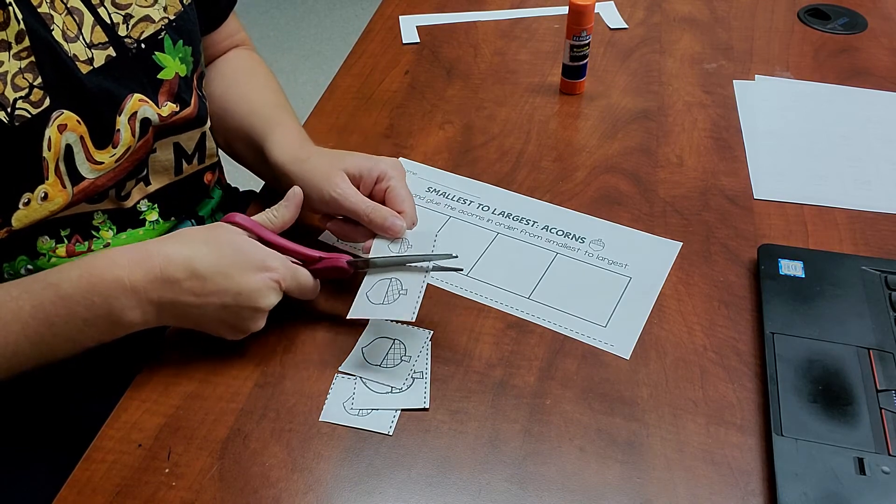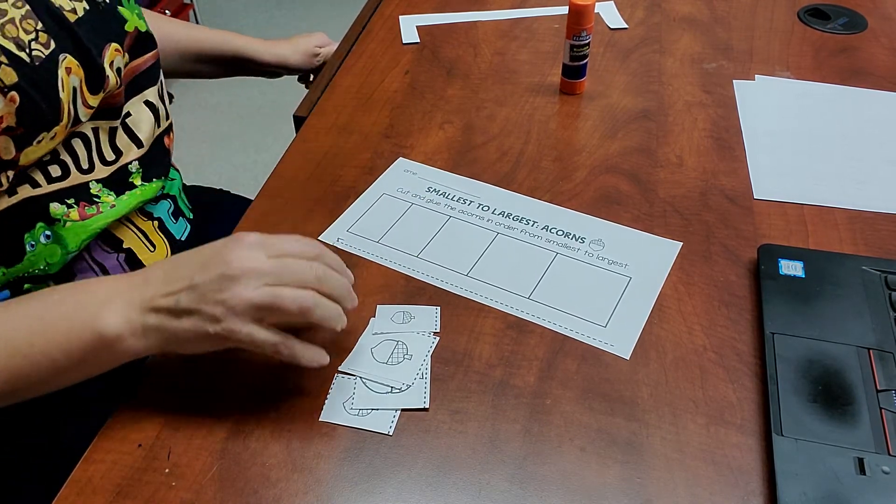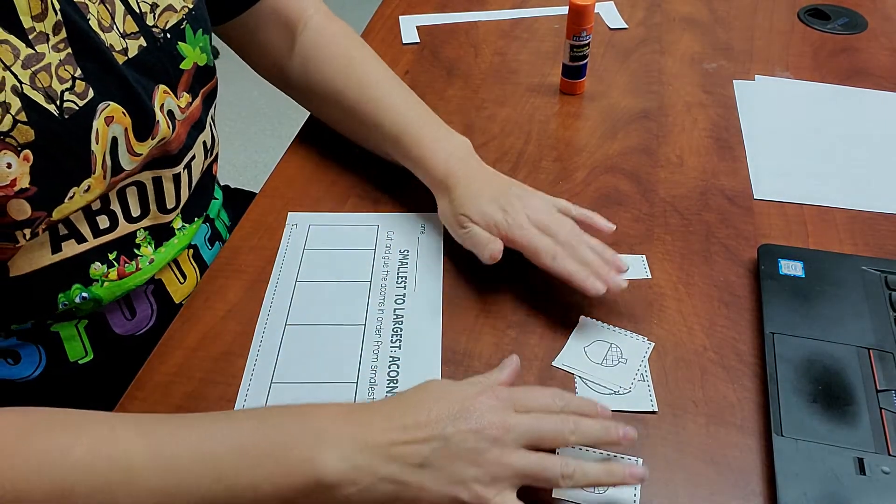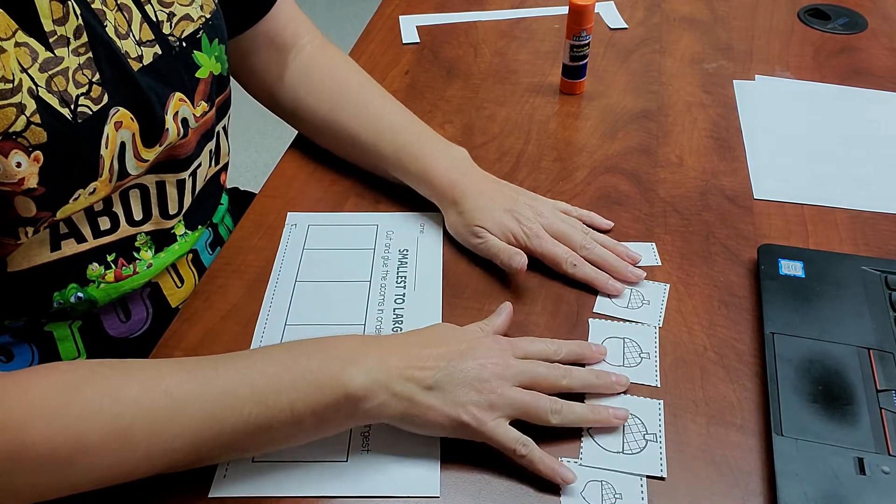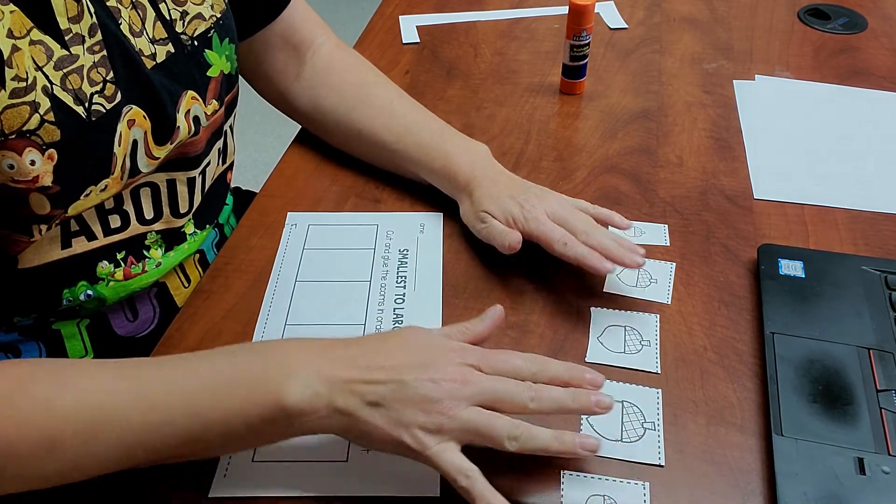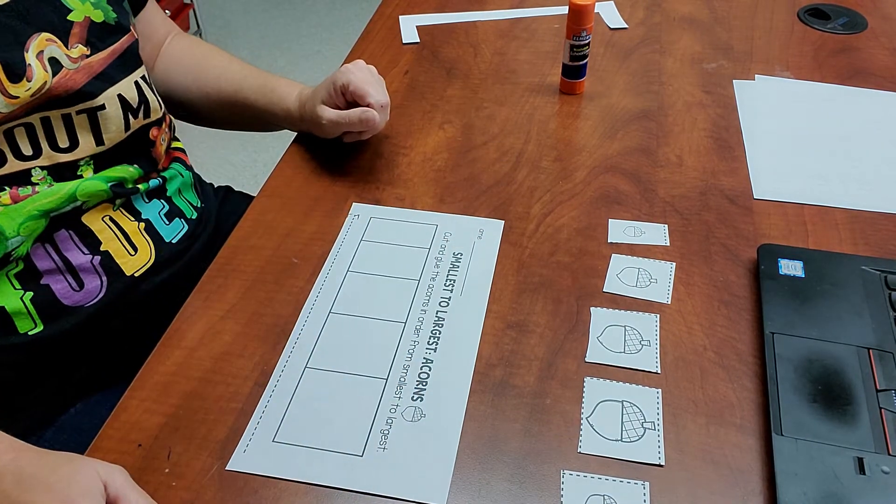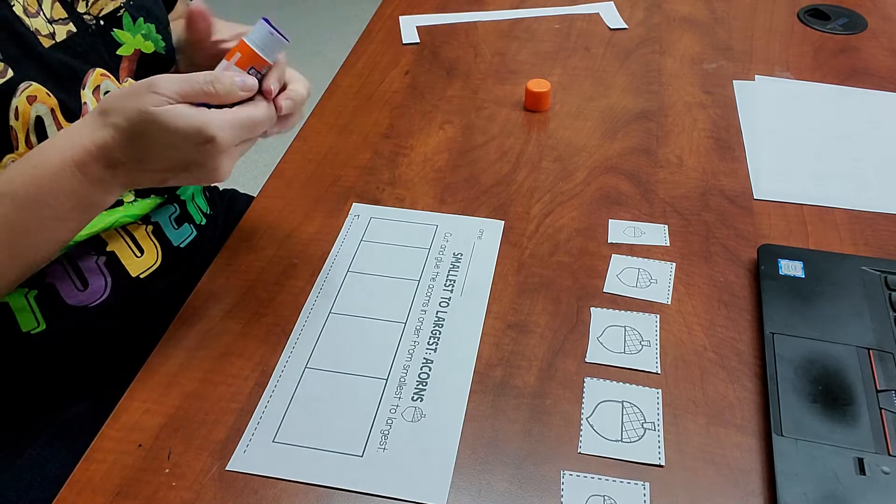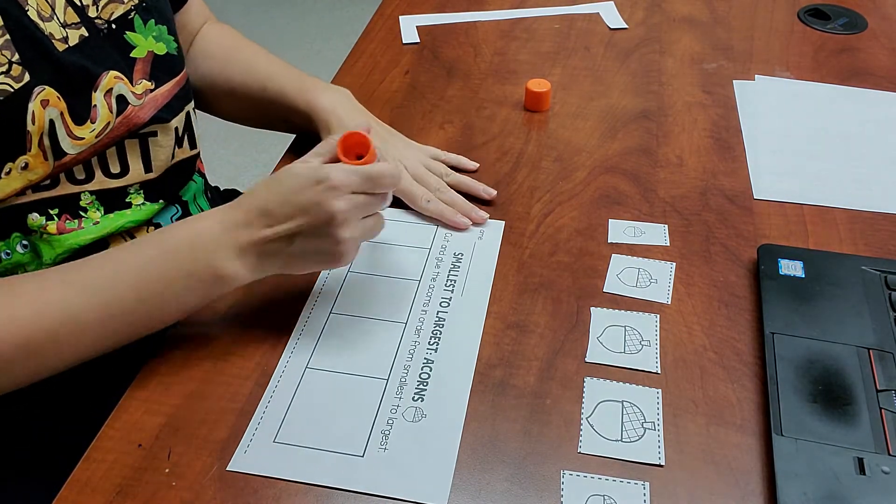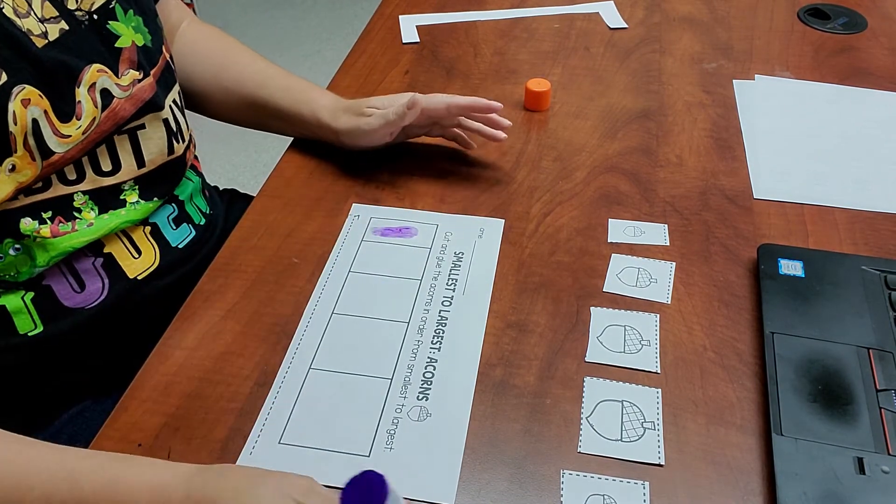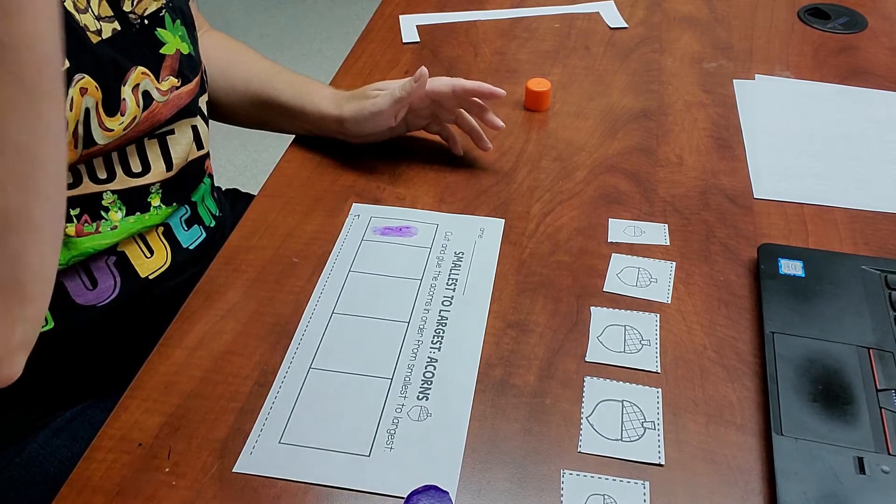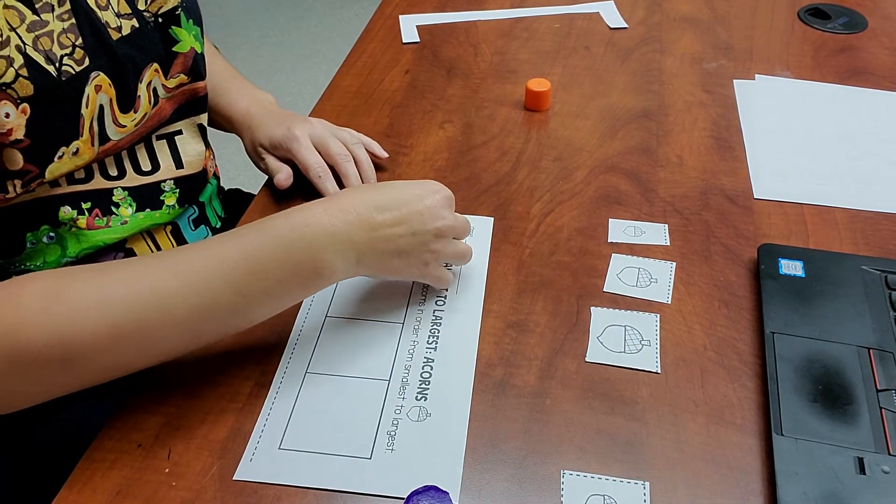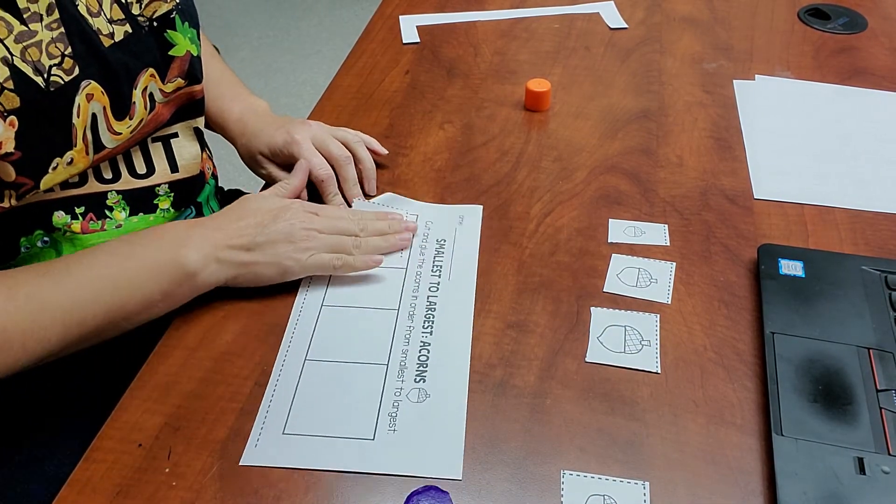So get your scissors, cut out on the dotted line. Spread them all out in front of you. And then we have to find the biggest one first. Biggest first. So I know the squares are not going to match up. That's okay. Put the biggest first.